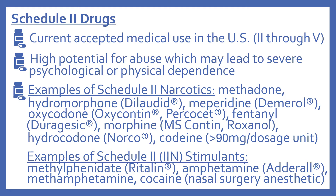Now schedule two drugs. These do have current accepted medical use in the United States — this is true for schedule two through five drugs. Schedule two drugs have a high potential for abuse which may lead to severe psychological or physical dependence. Schedule two narcotics include methadone, hydromorphone (Dilaudid), meperidine (Demerol), oxycodone (OxyContin, or Percocet when combined with acetaminophen), fentanyl (Duragesic), morphine (MS Contin or Roxanol), hydrocodone (Norco combines hydrocodone with acetaminophen), and codeine in doses greater than 90 milligrams per dosage unit.